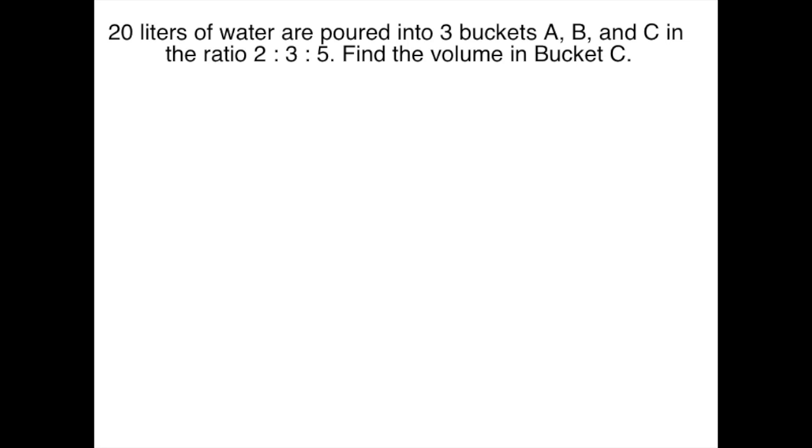Find the volume in bucket C. So I know that bucket A is listed first, then that means that 2 is going to be the number of units that I'm going to use for A. B is listed second, so that means there's three units for B. And C is listed third, so that means there's going to be five units for C.